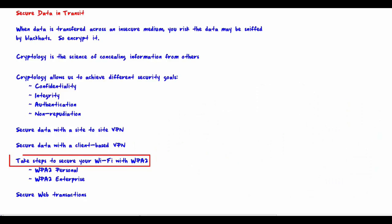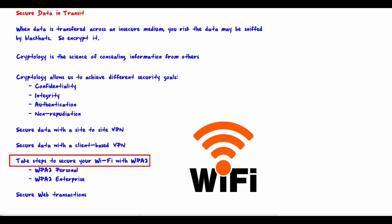Take steps to secure your Wi-Fi with WPA2 personal or enterprise. Anytime Wi-Fi is used, there is the potential that the RF signal — radio frequency signal — could be sniffed by a black hat who is able to receive that signal. Wi-Fi is inherently more insecure than wired transmission because the RF signal could be picked up by somebody sitting outside the building. WPA2 is built into wireless access points specifically for this purpose.